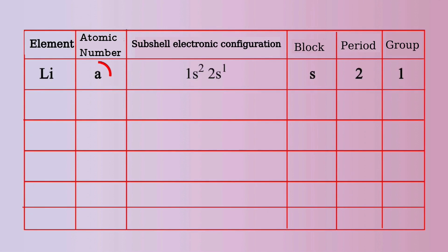Consider the element Lithium. Its atomic number is not given. Its subshell electronic configuration is 1s2, 2s1. It belongs to s block, period 2 and group 1.